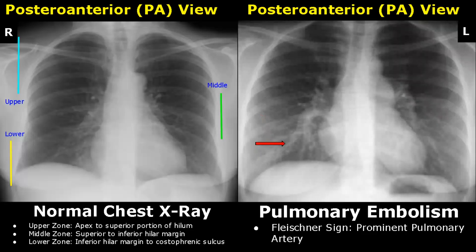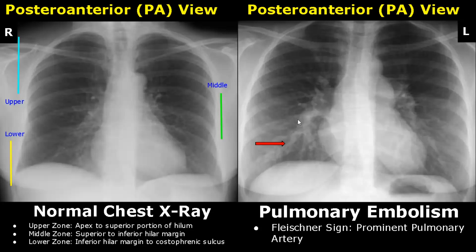Pulmonary embolism is a term given to occlusion of pulmonary arteries caused by a thrombus. It has a series of signs which can be observed on x-ray. The first is the Fleischner sign, in which the pulmonary artery becomes prominent. You can see the difference in the density of the pulmonary artery — it is brighter than usual.